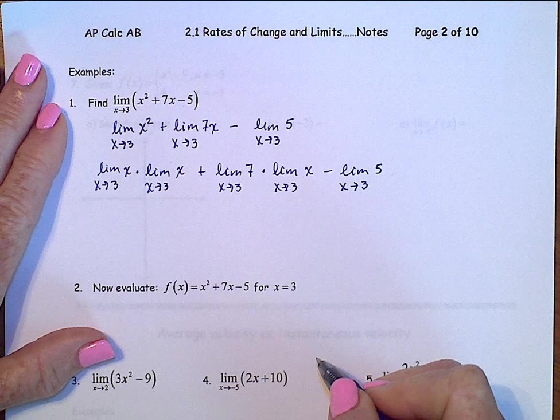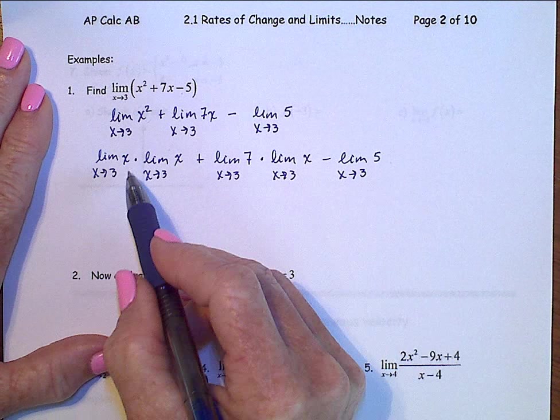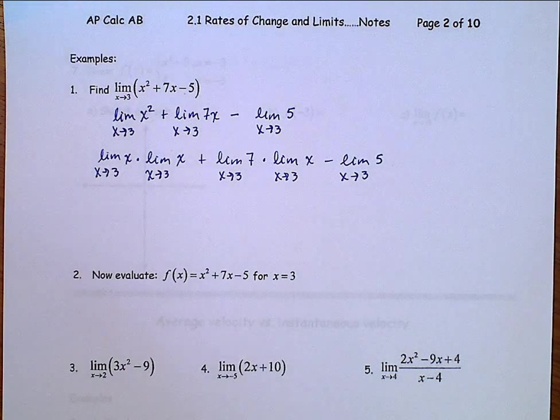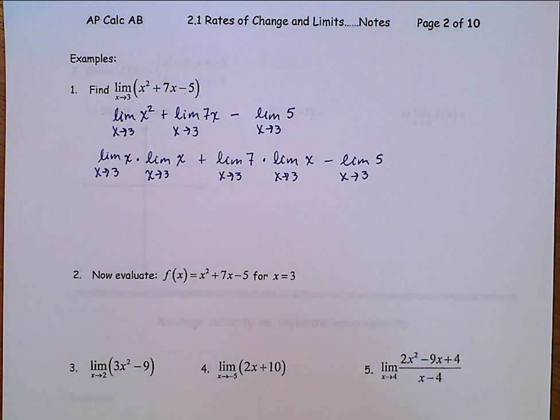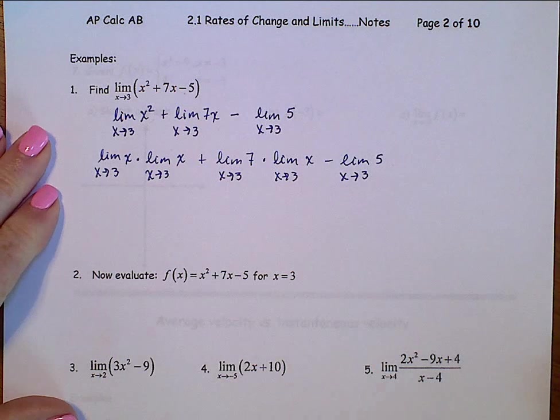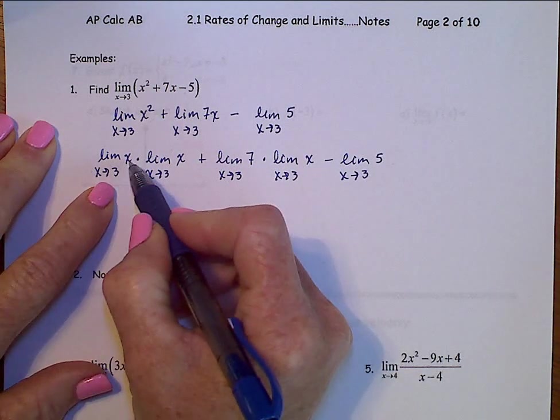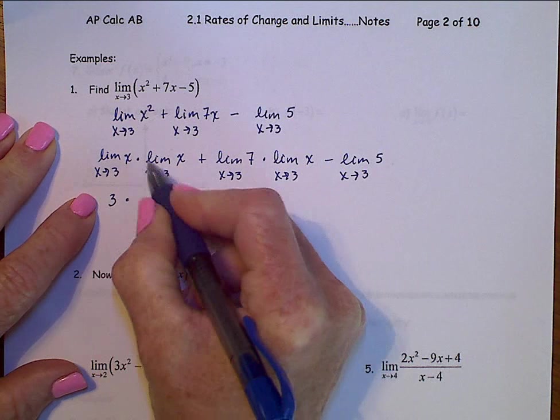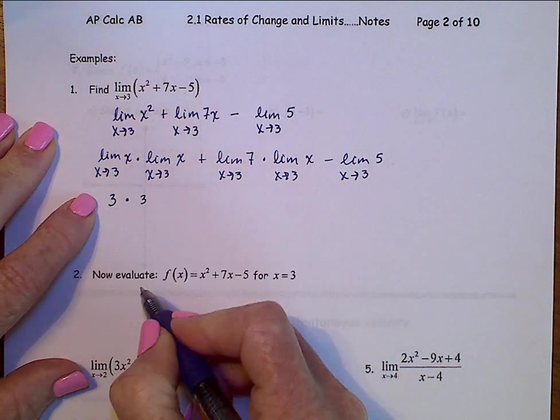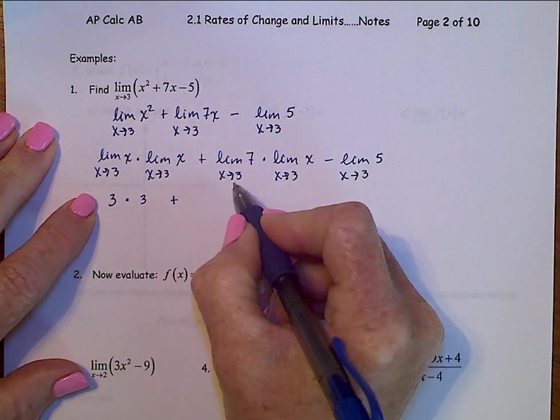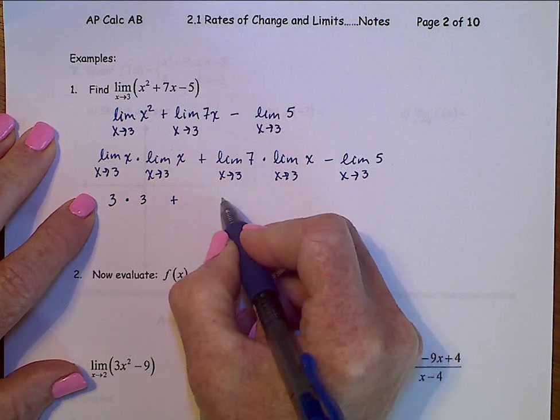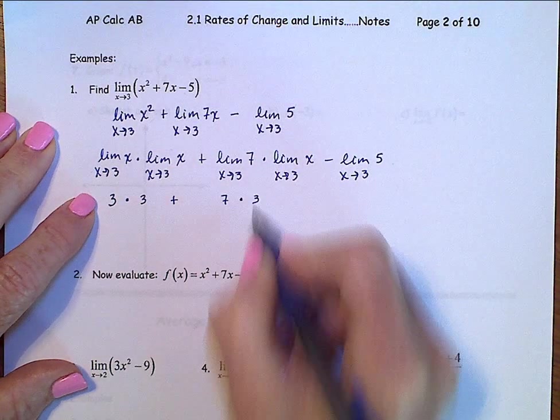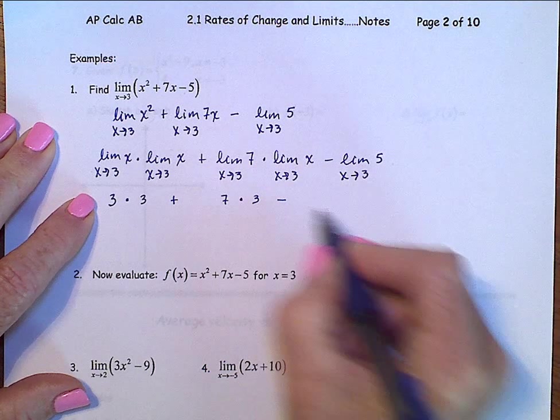Now what that does for us is that allows us to evaluate these limits because now each one is a variation of either the constant function or the identity function. So this one right here, the limit as x approaches 3 of x, that's the identity function, that's just 3, times here's another identity function, so that limit is 3, plus here's a constant function, that limit is just that constant, times a limit of the identity, there's a 3, minus, and the limit of a constant function is just the constant 5.